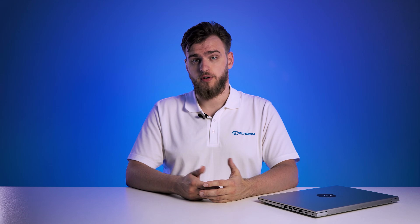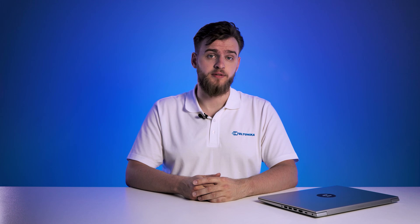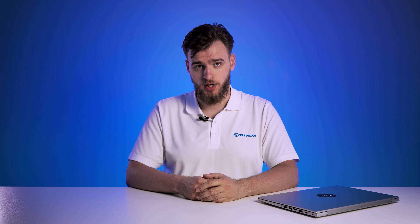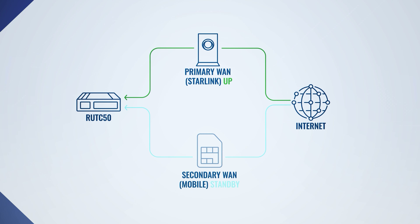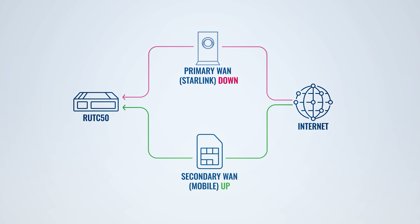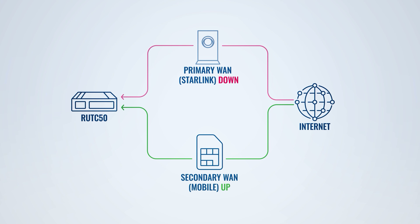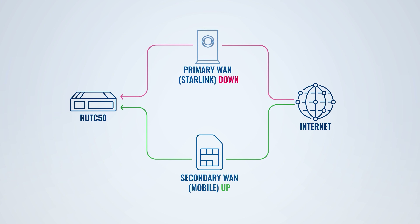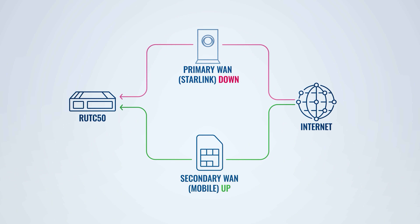Therefore, to ensure connectivity doesn't get disrupted, establishing failover can be a real game-changer. You can use our RUT-C50 5G router to obtain primary connectivity from Starlink, but if its connectivity goes down, the RUT-C50 would automatically switch to its mobile connection as a backup source.